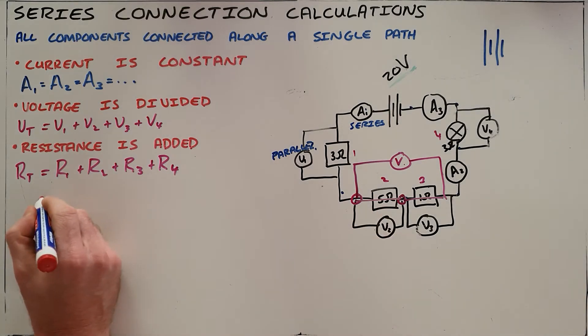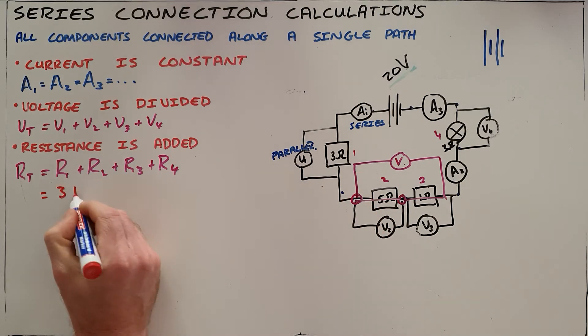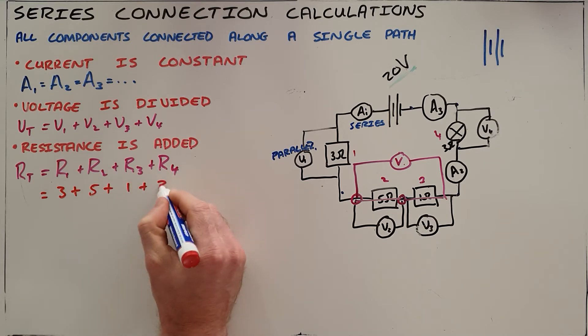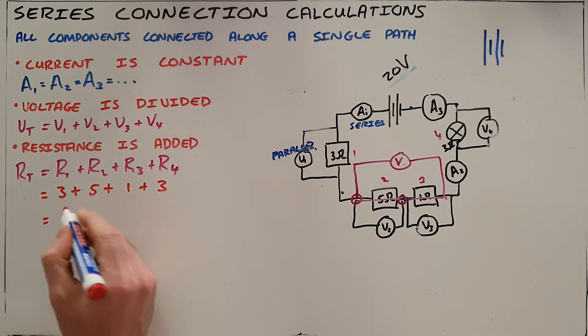We know that in a series circuit, the resistance is added, which means that the total resistance here is the sum of the 3 ohm, the 5 ohm, the 1 ohm, and the 3 ohm resistors, which means that the total resistance in this circuit must then be 12 ohms.